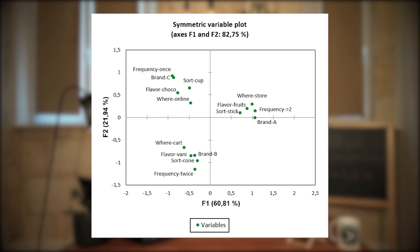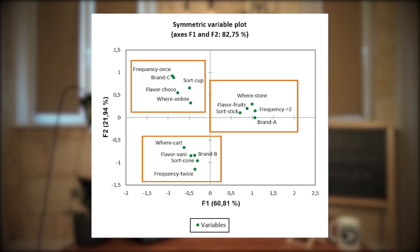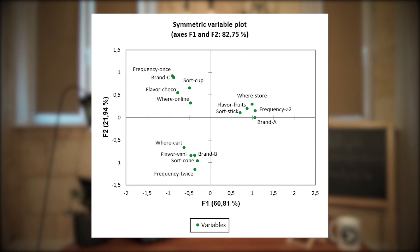This is a very neat MCA output as it allows us to clearly distinguish three consumer behavior profiles. Consumers who prefer brand A like fruity stick ice creams — they have them more than twice a week and purchase them in the supermarket. Brand B fans would rather go for vanilla-flavored ice creams in cones, at the ice cream cart, and twice a week.